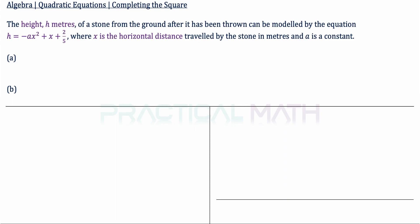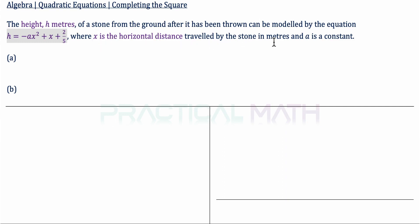In this video we shall be discussing quadratic equations using the method of completing the square. The question states: the height h meters of a stone from the ground after it has been thrown can be modeled by the equation h equals negative ax squared plus x plus 2 over 5, where x is the horizontal distance traveled by the stone in meters and a is a constant.